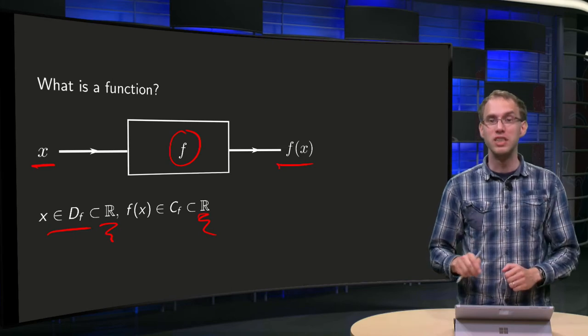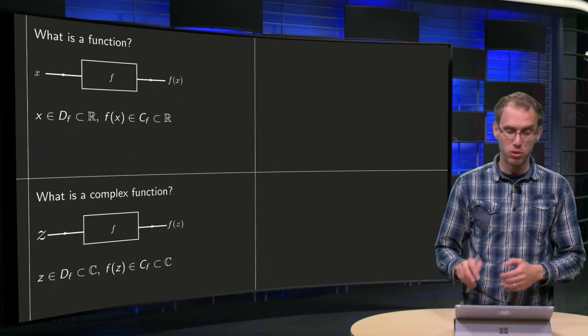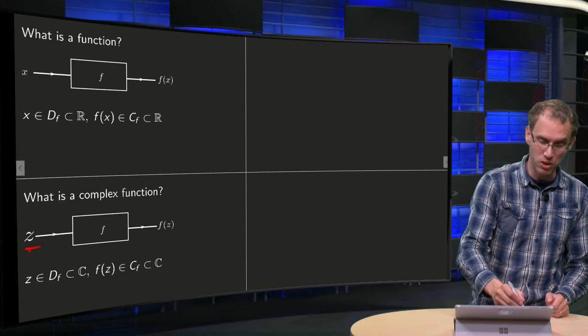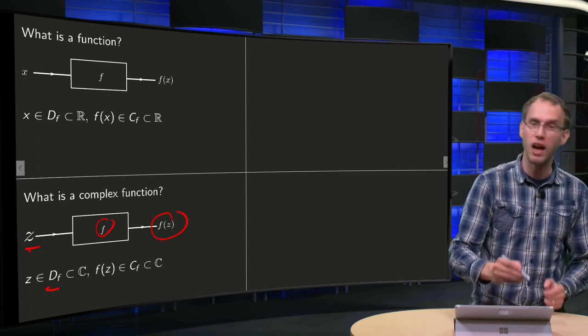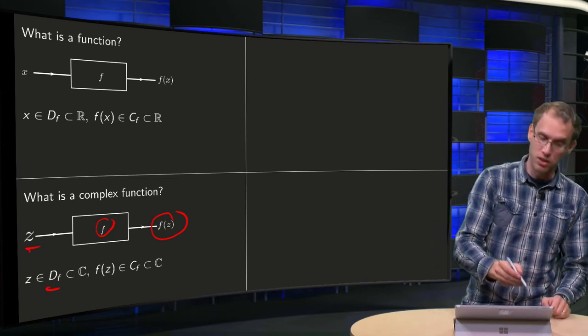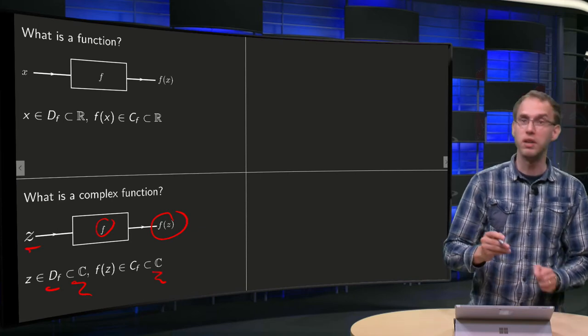Now we are going to generalize this. The picture for a complex function looks almost the same. Now we have a z. Our function is again a rule which assigns to any z in the domain a function value f(z). The only difference is that the domain will be a subset of C and the codomain will also be a subset of C.